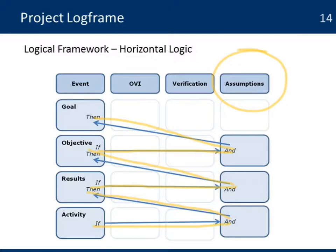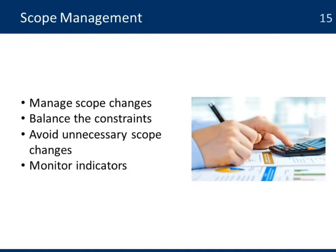Assumptions do have a tendency of changing, and that's important — they are verified at the moment you're implementing the project. Here are some recommendations to help you manage the scope. Manage scope changes: it's very easy for little things to add up, and being out of control can create problems. Balance the constraints: if you're adding or taking out scope, look at what the impact will be on the other constraints — the schedule, your budget, and quality.